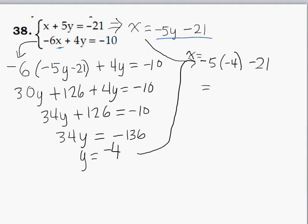That's X equals that. Negative 5 times negative 4 is positive 20. 20 minus 21 is negative 1. So now we have our two values for the point at which the two lines intersect. X is negative 1 and Y is negative 4.